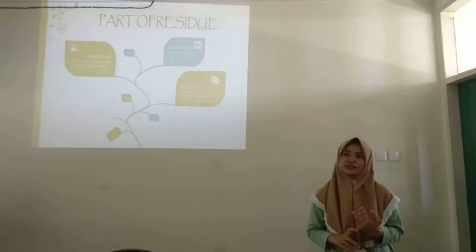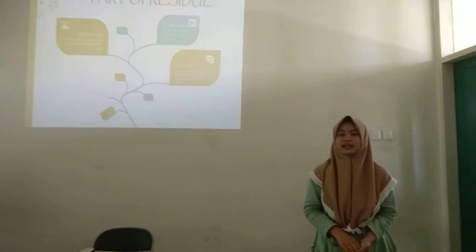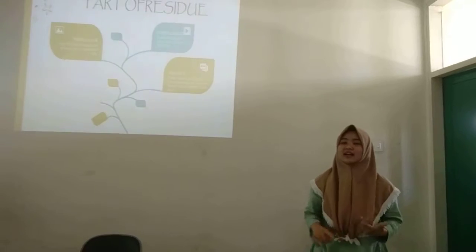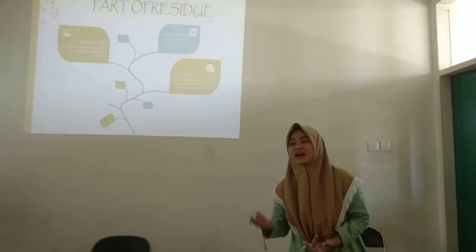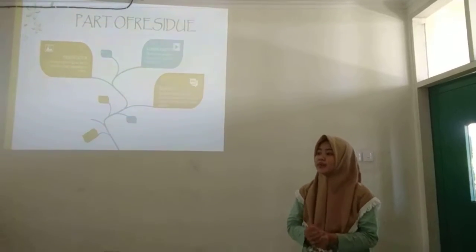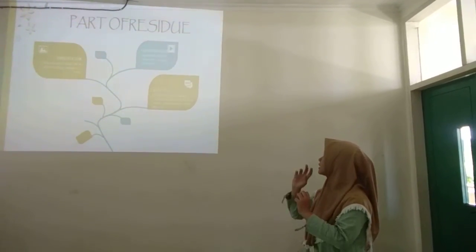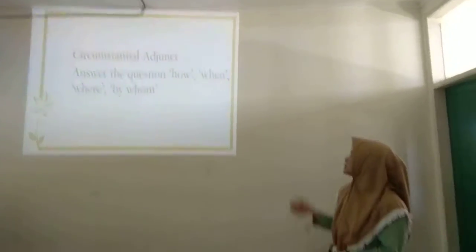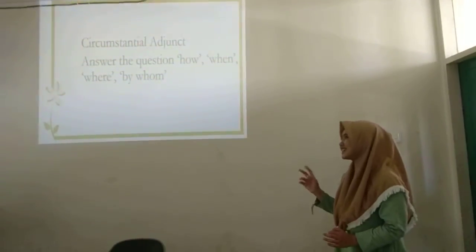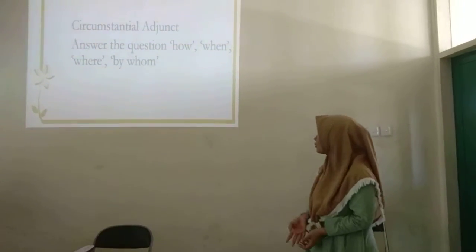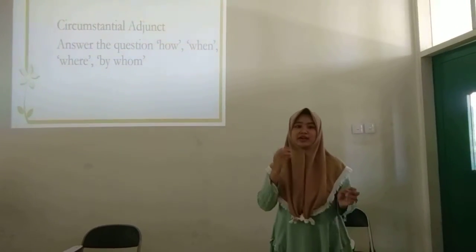And the last is adjunct. Adjunct divided into four parts: circumstantial adjunct, conjunctive adjunct, comment adjunct, and mood adjunct. But in this section, we will discuss about circumstantial adjunct. So, circumstantial adjunct is answering question in whom, when, where, and by whom.